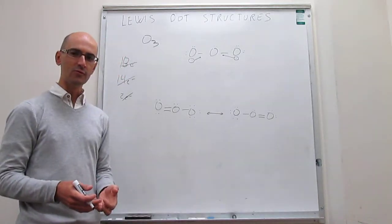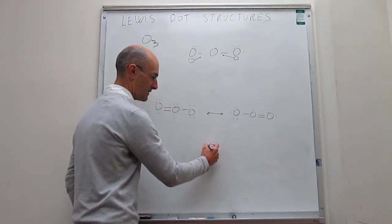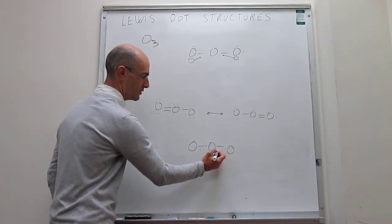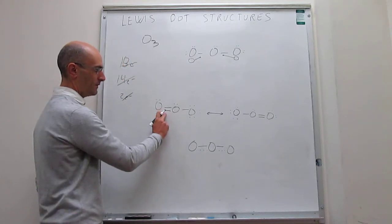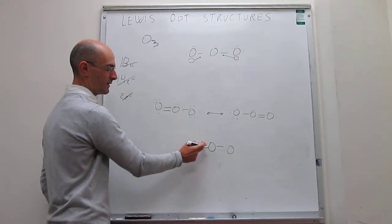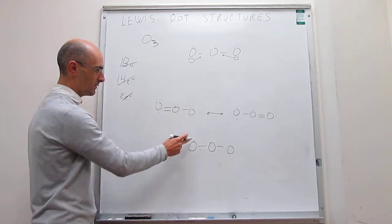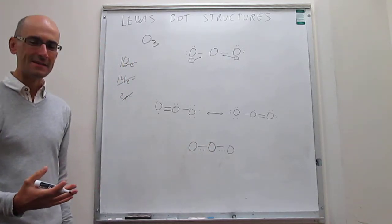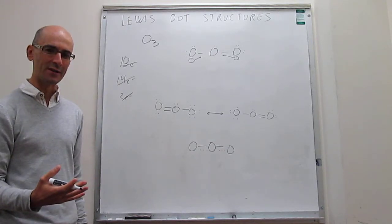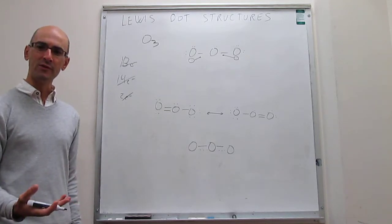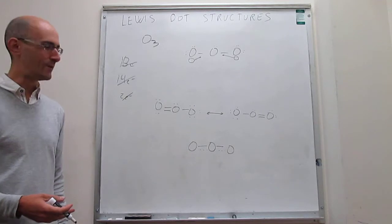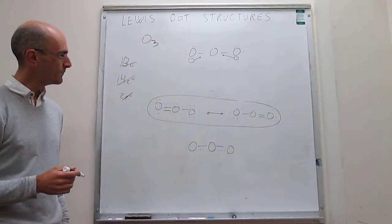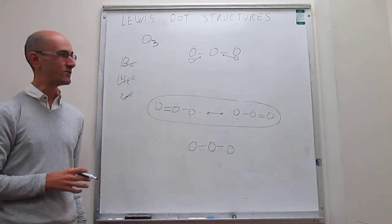You can try to picture what this averaged structure looks like. On average, you will have something between a single bond and a double bond — essentially a 1.5 bond between those two oxygen atoms. So these are the Lewis dot structures for ozone, with two resonance structures that satisfy all the rules, and this introduces the concept of resonance structures in Lewis dot structures.